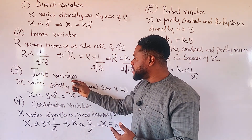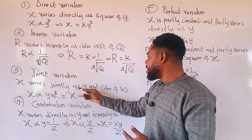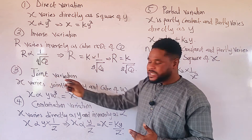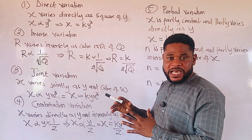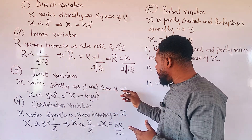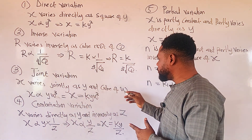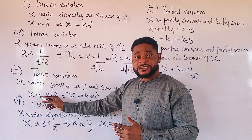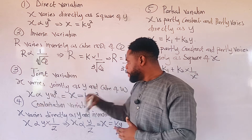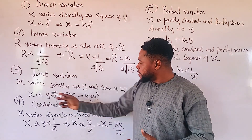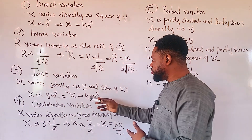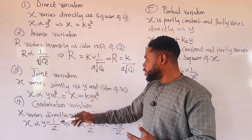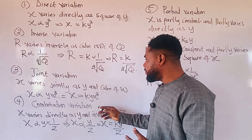We have what we call joint variation. x varies jointly as y and cube of w. In joint variation, the 'and' here means multiplication. So we multiply our two quantities, which are y and cube of w, as you can see here. We use our variation sign to join them, then the next step is to change this sign to an equal sign, where we introduce our constant, which multiplies y and cube of w.